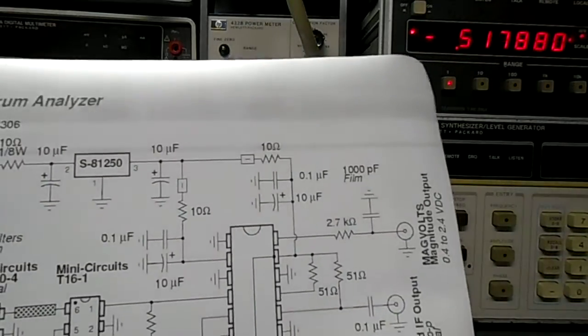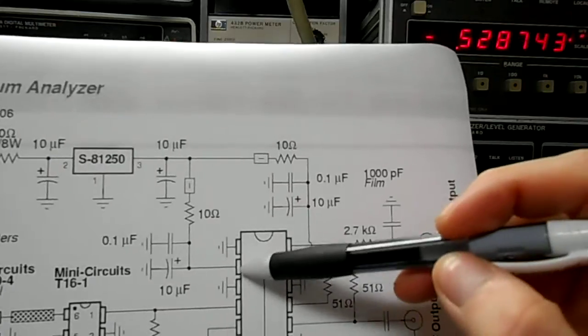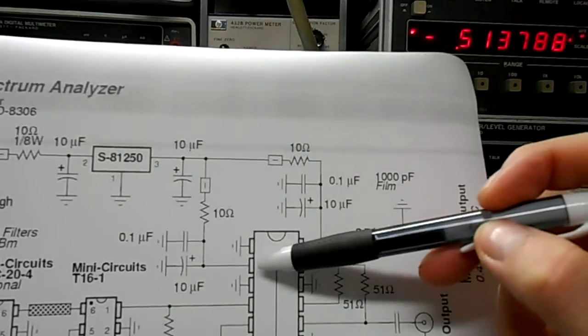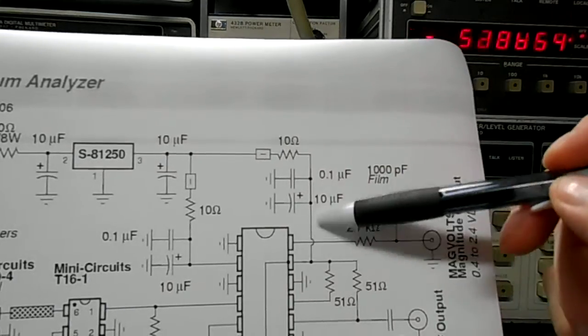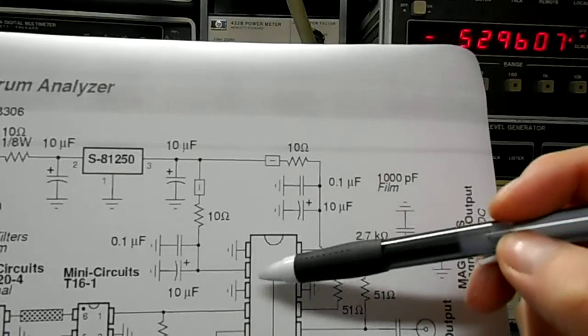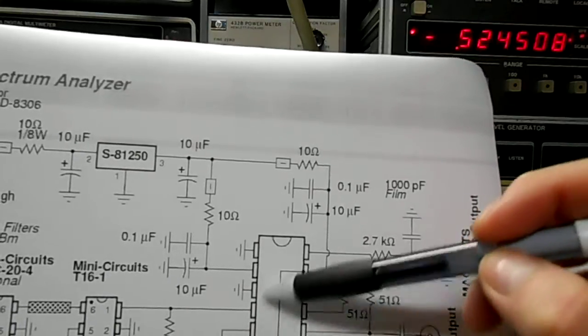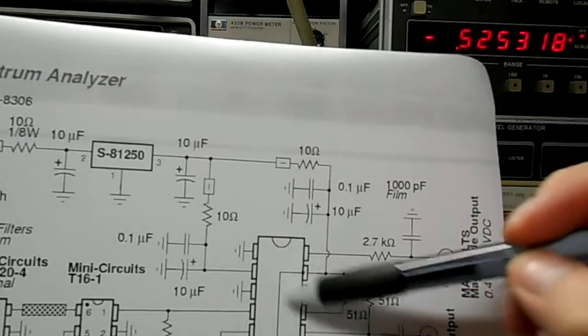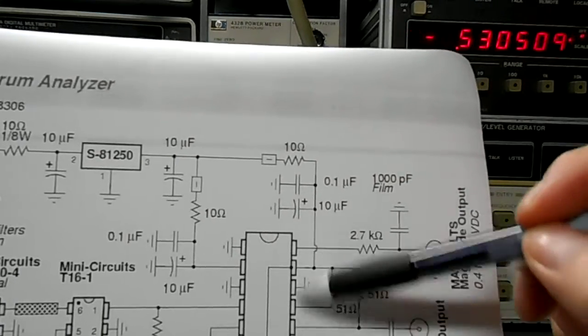The AD8306 should be run off of separate or filtered power lines. Pin 2 has its own decoupling network and pin 15 also has its own decoupling network. This isolates the power stage, the amplifier power stage from any noise created in the final output amplifier.